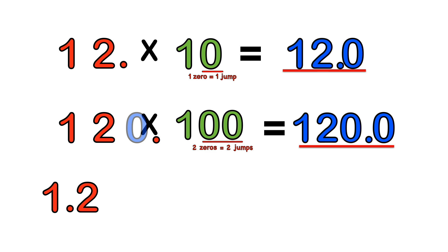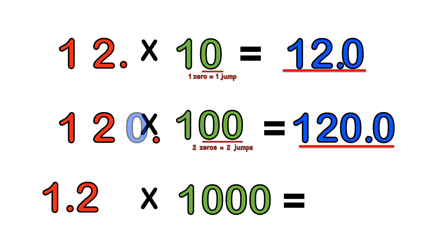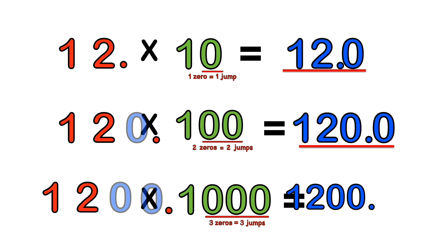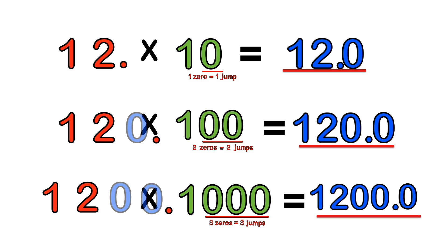How about 1.2 times 1000? Step one: count the number of zeros. Three zeros equals three jumps to the right. We do one jump, the second jump over nothing, the third jump over nothing — so we have two zeros to fill in. We make the jumps and remove the decimal point. So the answer is 1200.0.